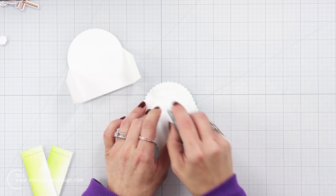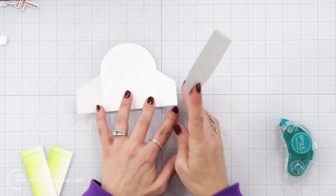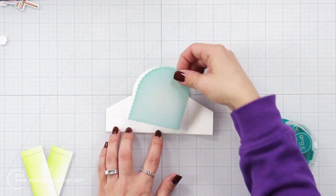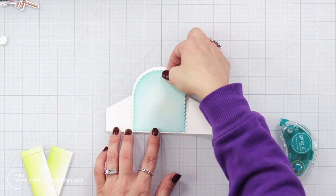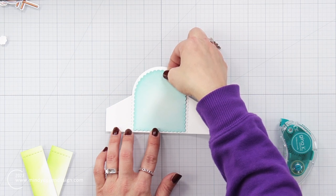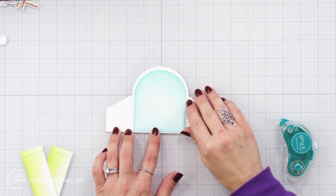I'm going to add that right to the back of my card using my tape runner. So I'm just going to open those flaps back up and line this up so I have even white margins going around my scalloped piece.